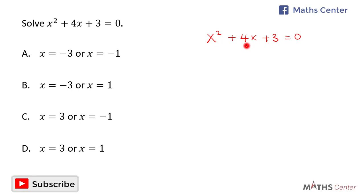Those two numbers are 1 and 3, so you replace 4x with x and 3x. We have x squared plus x plus 3x plus 3 equals zero.